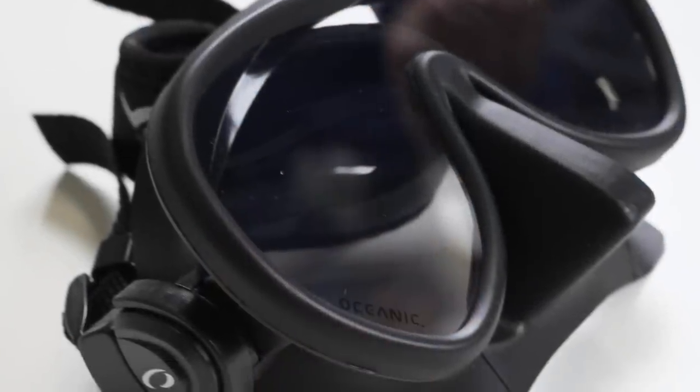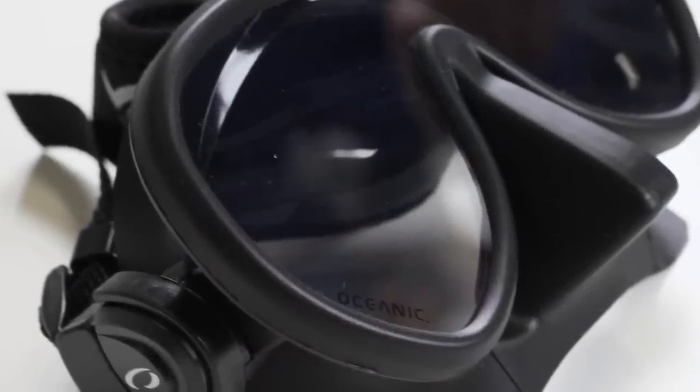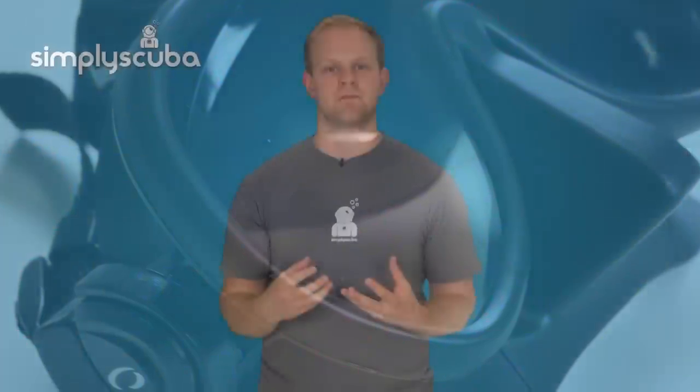In a frameless mask, the silicone skirt is molded around the other components to join them all together. This produces a very slimline mask that can be folded very flat, making them ideal as backup masks that can be easily stowed in a pocket. Because the lenses are embedded with the silicone skirt, it is not possible to replace them if they break and prescription lenses cannot be fitted.